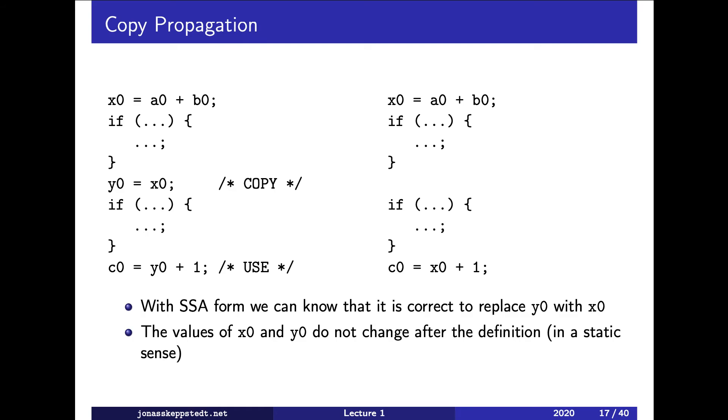So what can we do with it? If we have this function, which I have for convenience already translated to SSA form. So we have x0 and now we have a copy from x0 to y0. And then we use y0. Can we replace this and remove y0 and just use x0 here? Or do we have to check what happens in this if statement?